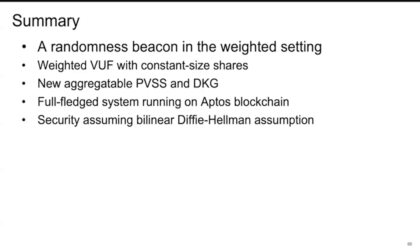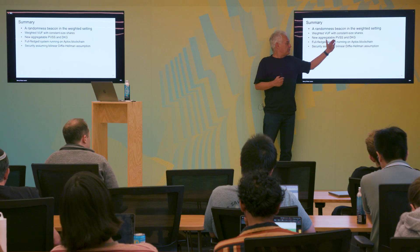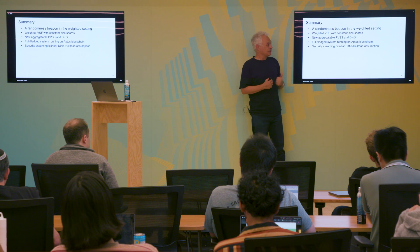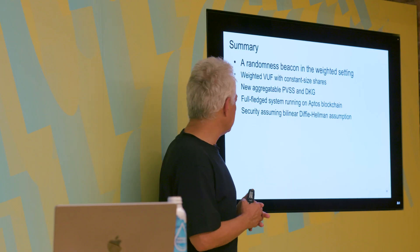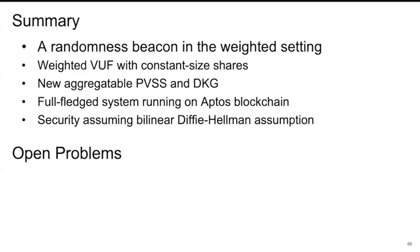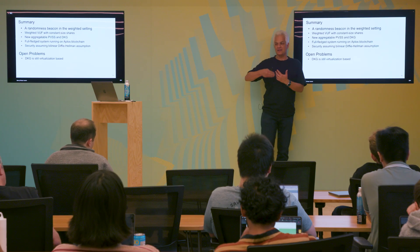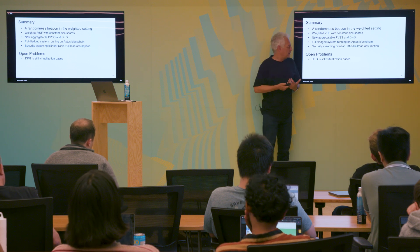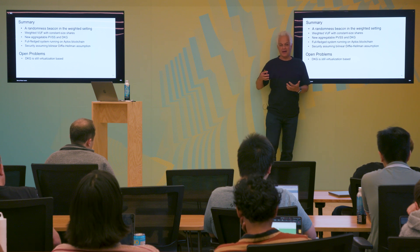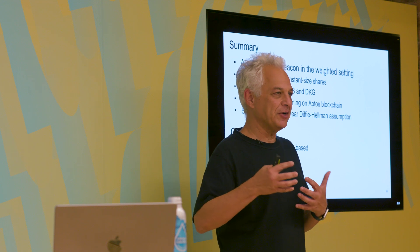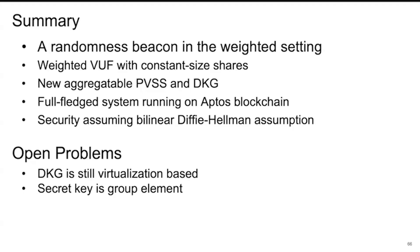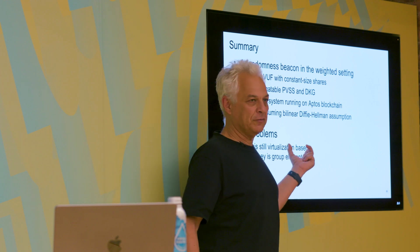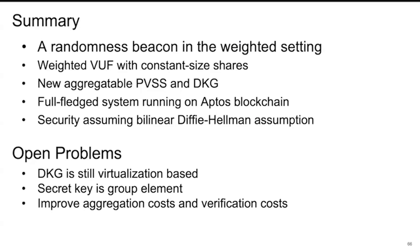In summary, we showed a randomness beacon in the weighted setting: a weighted VUF with constant-size shares, a new aggregatable PVSS and DKG, a full system running on the Aptos blockchain that everyone can use, with security based on the bilinear Diffie-Hellman assumption. Open problems include: the DKG is still virtualization-based (weight-20 validator gets 20 shares rather than 1), implying weighted secret sharing with constant-size shares as a hard open problem; the secret key is a group element rather than a field element, which complicates certain applications.